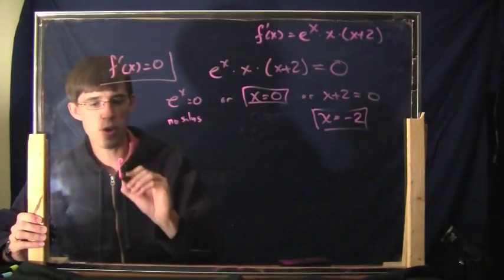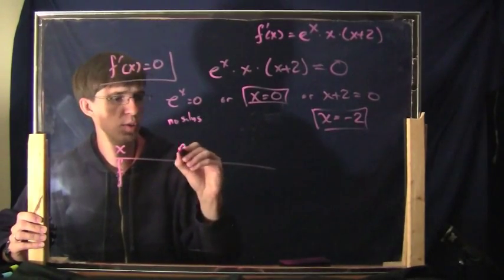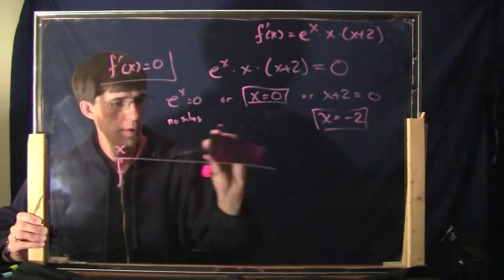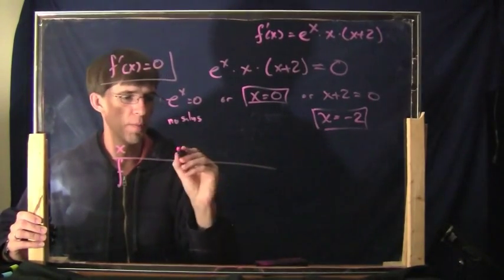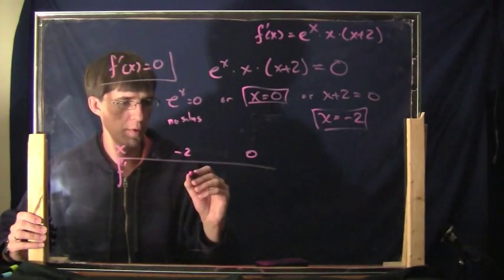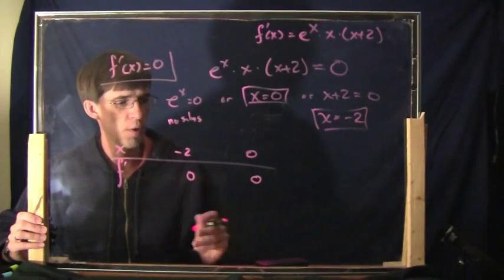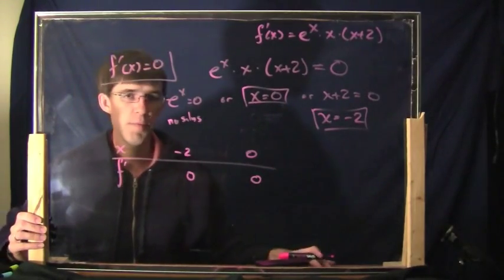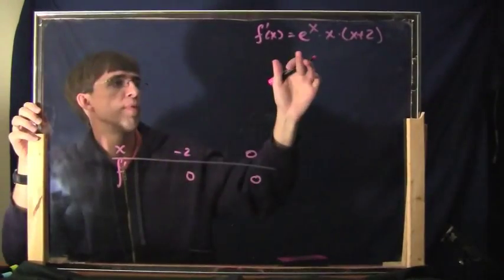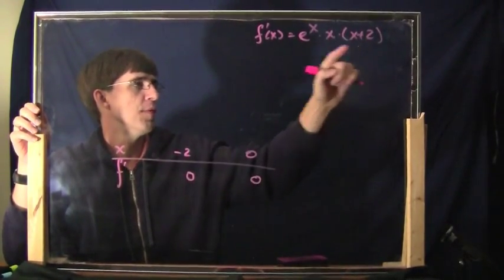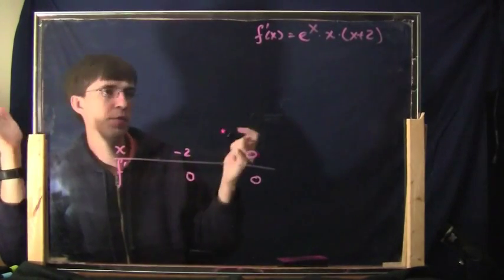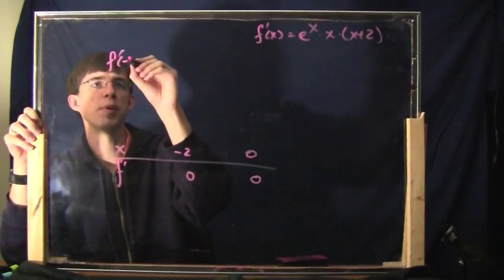We make our chart. The two critical numbers are negative two and zero — put them in order, minus two before zero. The derivative is zero at each of these points. To find the sign of the derivative in between, we plug in test numbers. Let's start in the region to the left of negative two — choose negative three. What is f prime of negative three? Plug negative three into the derivative: e to the minus three, times minus three, times (minus three plus two).